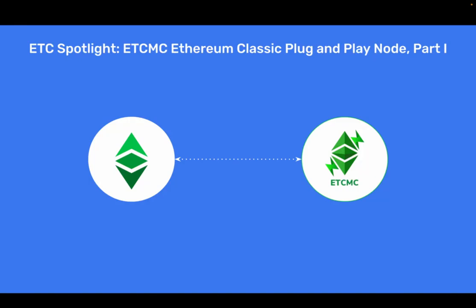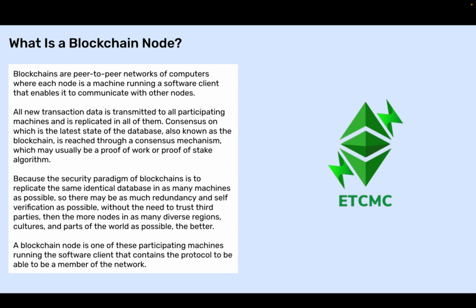ETC Spotlight: ETCMC Ethereum Classic Plug and Play Node, Part 1. What is a blockchain node? Blockchains are peer-to-peer networks of computers where each node is a machine running a software client that enables it to communicate with other nodes. All new transaction data is transmitted to all participating machines and replicated in all of them. Consensus on the latest state of the database, also known as the blockchain, is reached through a consensus mechanism, which may be a proof-of-work or proof-of-stake algorithm.